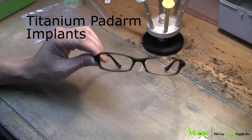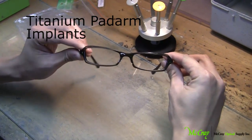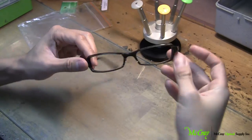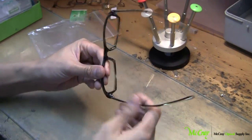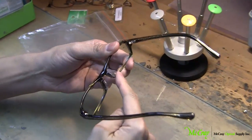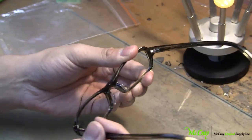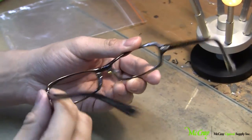Today we're going to do another titanium pad arm implant. Now the frame that we've chosen today actually has very high nose support, so these two nubs right there we're going to actually have to remove with a cutter.